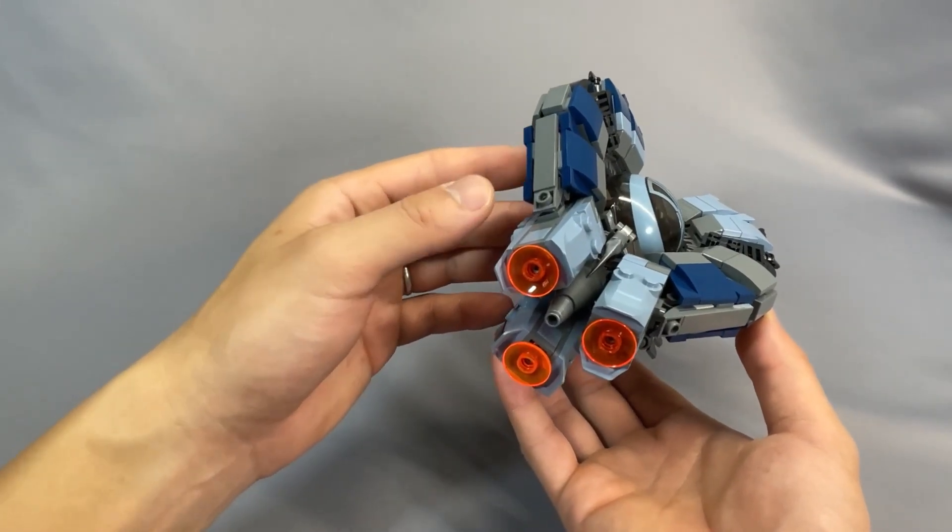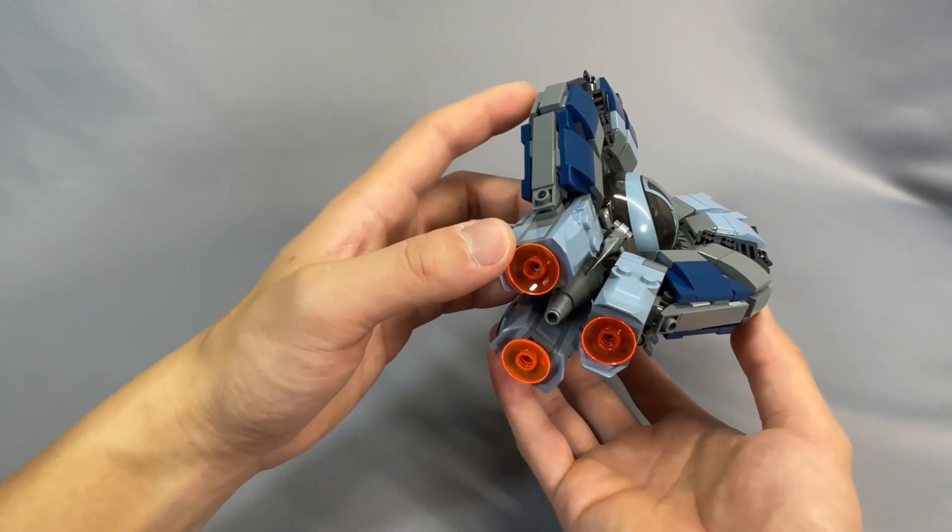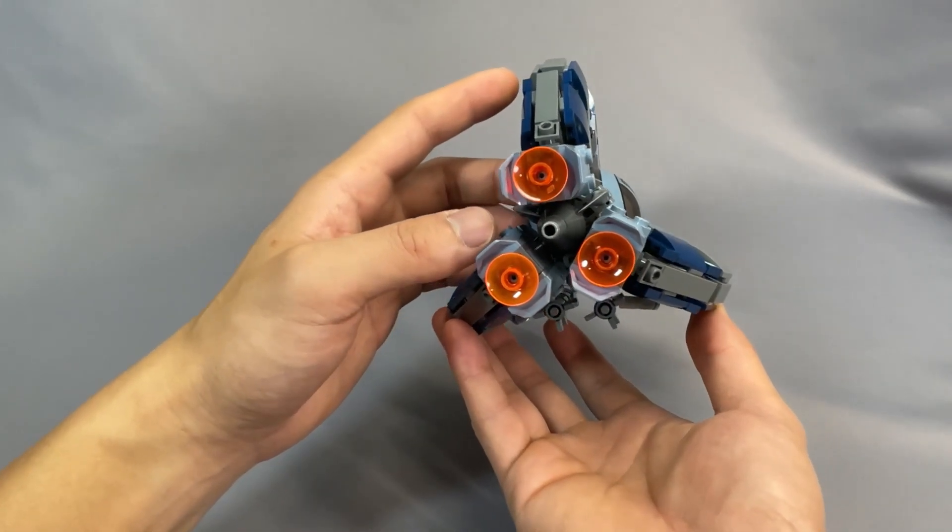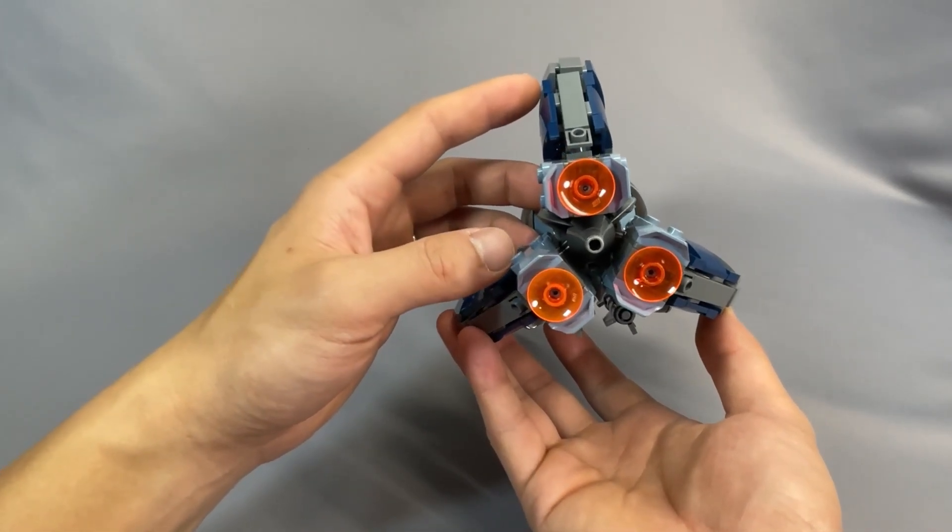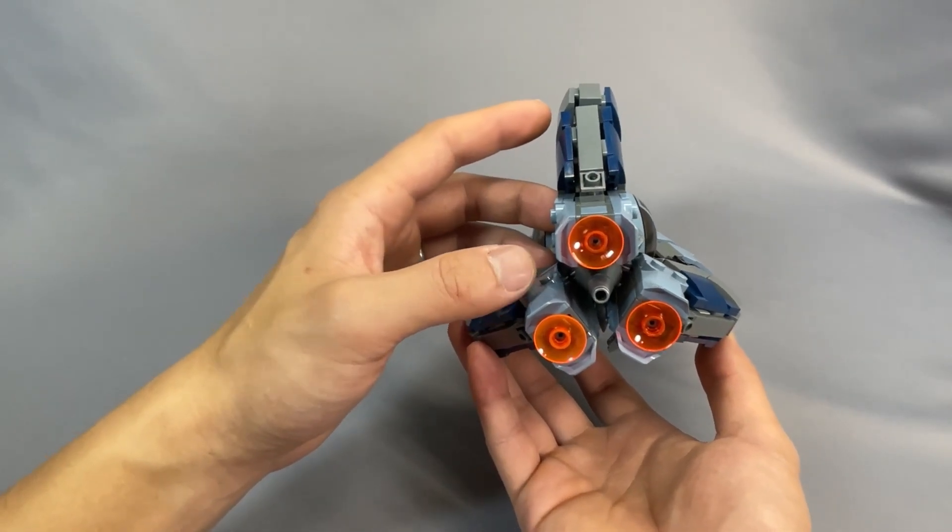Moving to the back, the three engines surround this cone-shaped assembly. And there's some nice trans-neon orange dishes for the engine glow. I was glad to see that these engines are pretty closely clustered together, and this is a huge improvement over the official sets that never really got this particular aspect of the Tri-Fighter correct.